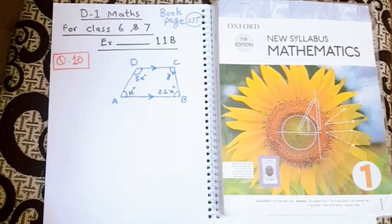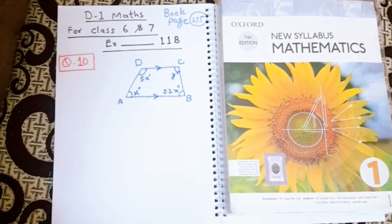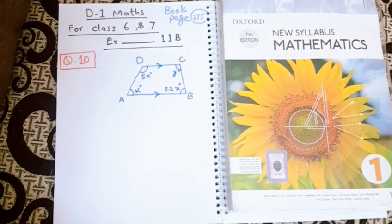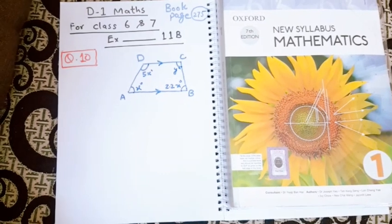Hello, Assalamu alaikum students. This is mathematics D1 for class 6 and 7 students, book page number 275. I have already uploaded question number 7, 8 and 9 videos yesterday.